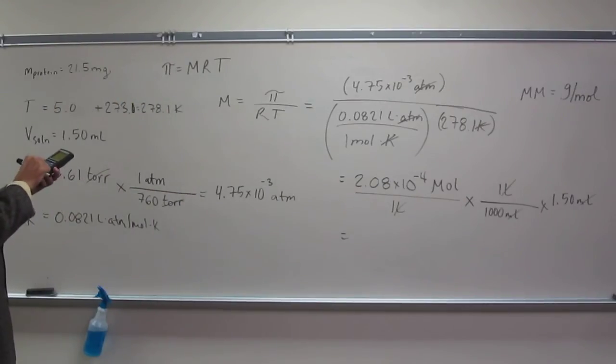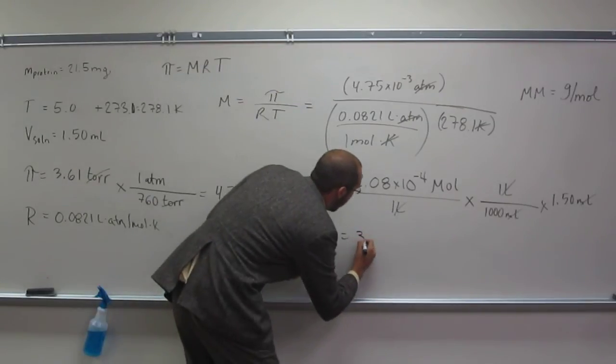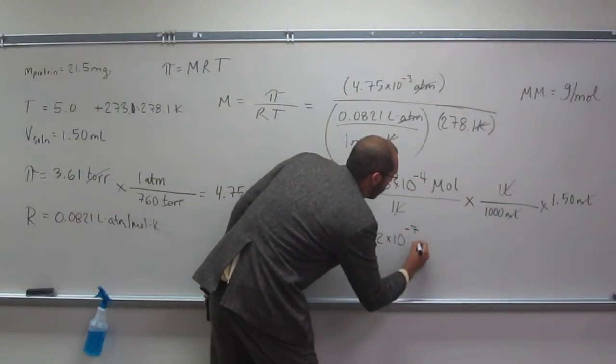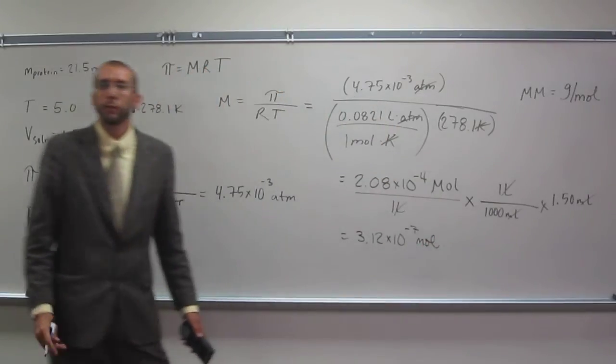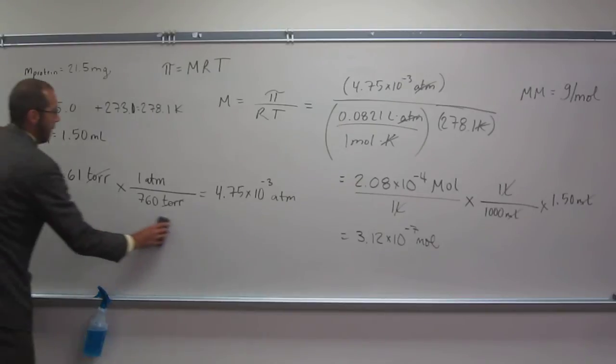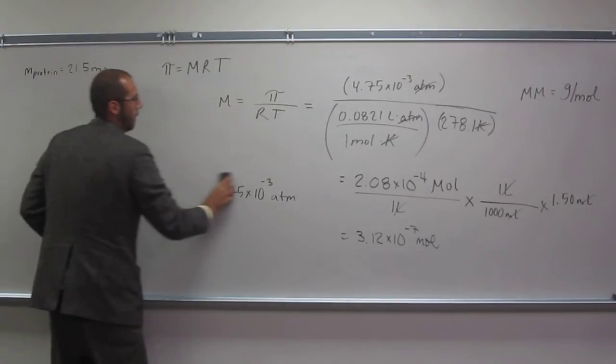Okay, so let's do that. Divided by 1,000 times 1.5. Okay, so the number of moles of protein we have is 3.12 times 10 to the negative 7 moles. So now, I'm actually going to have to erase some of this. Can I erase this part of the board?